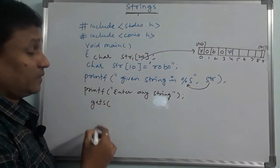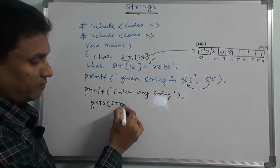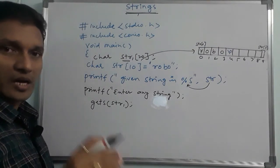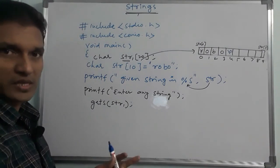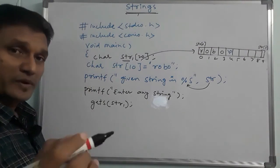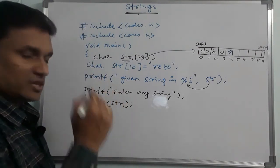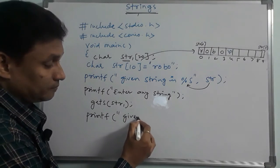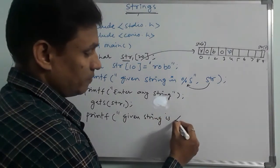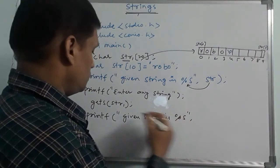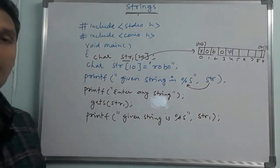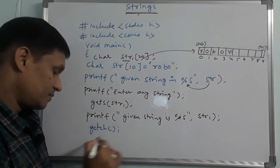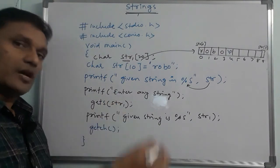The gets() function is used as gets(str1). If gets() is used, it reads a full line including spaces. Whereas scanf reads only a single word. For display: printf("given string is %s", str1). Finally, we use getch() to close the main function. This is how we implement strings in C language.